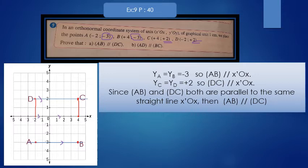AB is parallel to x-axis and CD is parallel to x-axis. So, clearly, AB is parallel to CD. Since AB and DC both are parallel to the same straight line, they are parallel to each other.